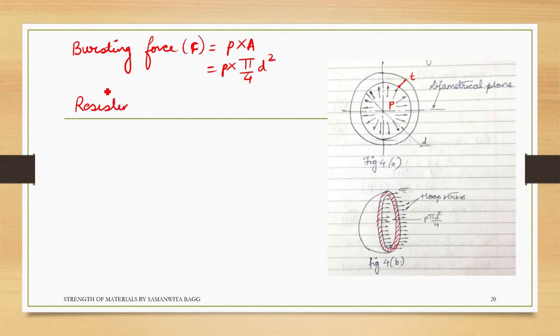Fr will be sigma_c into area. Now the area is this, so again it is going to be pi d, that is the circumference, into the thickness.